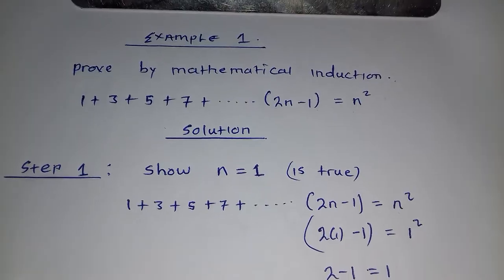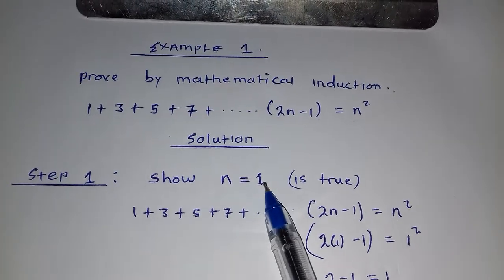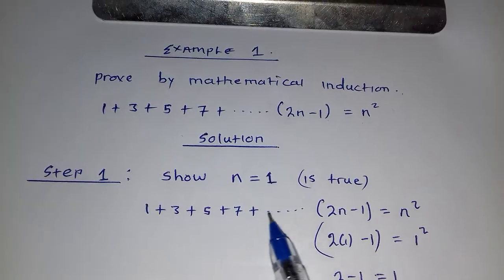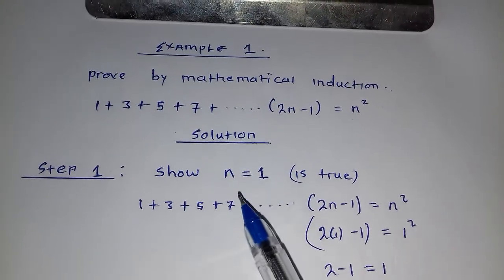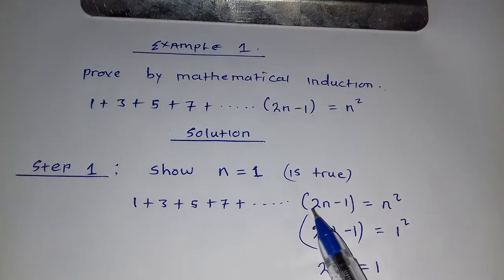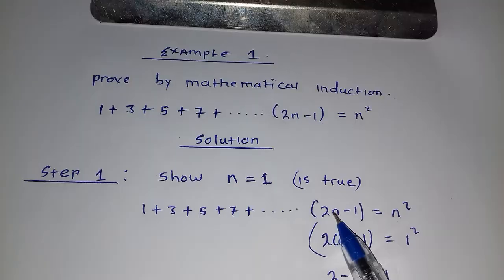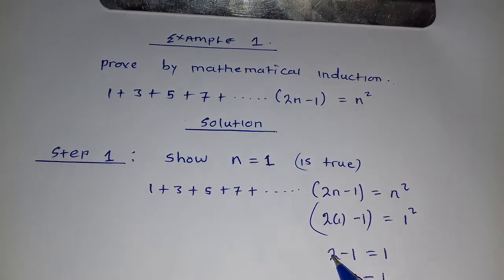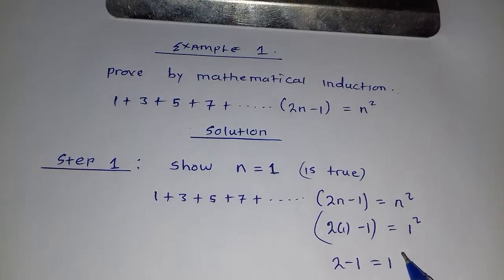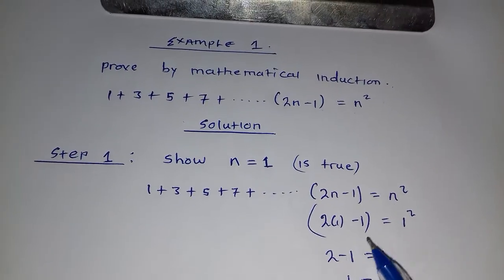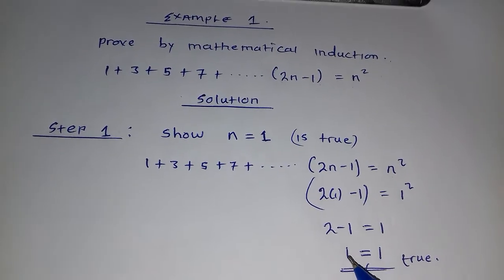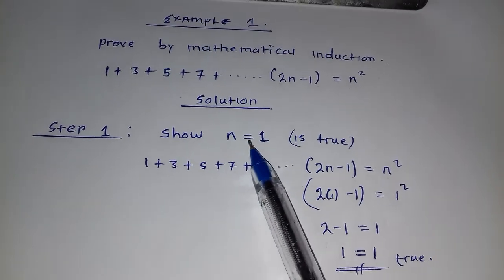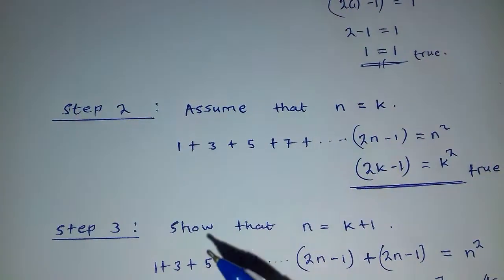Step one: show that n is equal to 1 is true. So what you do here, you write whatever you are given. Where there is n, you're going to put 1. So here we have 2n minus 1 equal to n squared. Putting n equal to 1: 2 times 1 minus 1 equals 1 squared, which gives 2 minus 1 equals 1. Whatever we have on this side is exactly what we have on the other side. So n is equal to 1 is true.